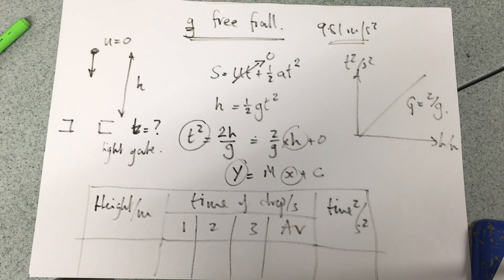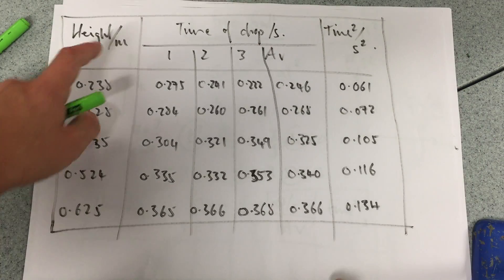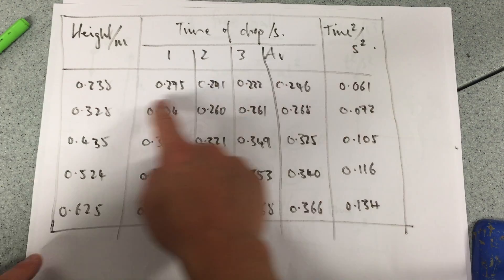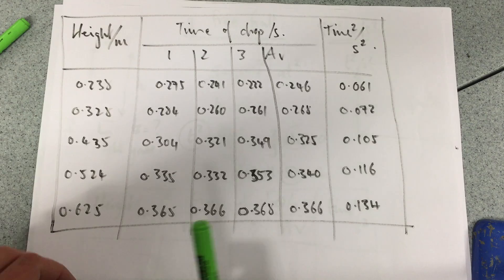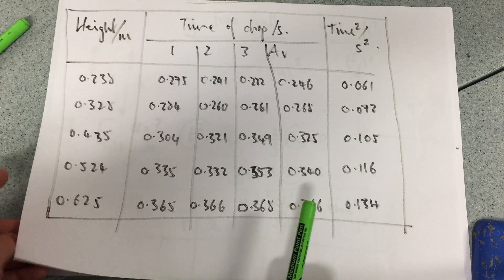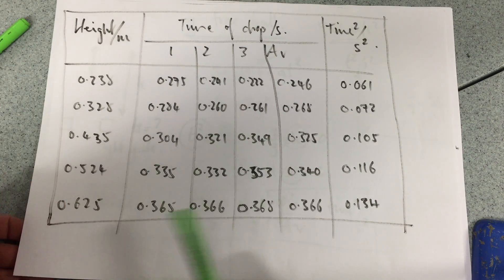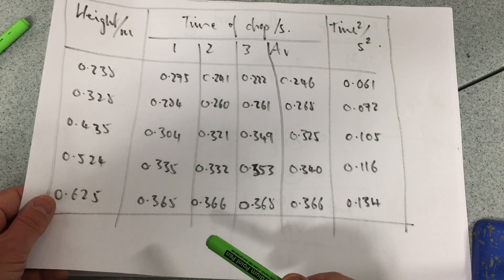So my results are height, time of drop, time squared, and hopefully, from those results, you should be able to take a gradient. So if you hit pause, you can copy those down. Or they're in the link below.